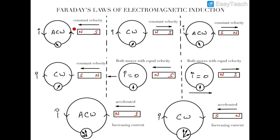When Faraday moved the north pole of the bar magnet towards the coil, he observed that an induced current appeared in the coil in an anti-clockwise sense. When he moved the north pole away from the coil, the current reversed to a clockwise sense. When the south pole moved away, anti-clockwise current was induced; when the south pole moved towards the coil, clockwise current was induced.